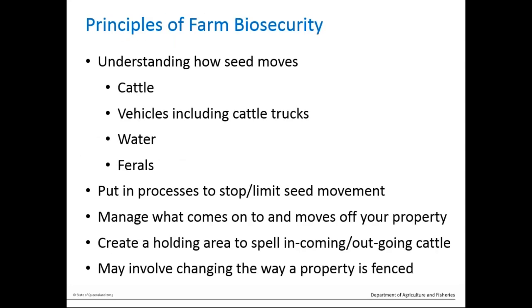Farm biosecurity — we might talk about that on the boundary fence, but we need to talk about it internally as well. We need to understand how the seed moves: vehicles including cattle trucks, water, feral animals. We could put in processes to stop or limit that seed movement, because it doesn't spread by a part of a plant being shifted — it's all about the seed. It might mean spelling cattle as we move them around the property, and creating a holding area we move cattle through so we can treat that area and limit the risk of spread of seed throughout the whole property.